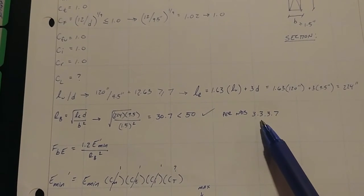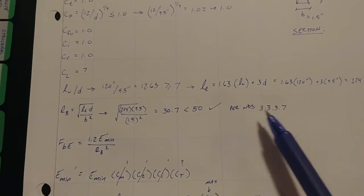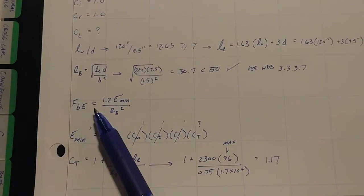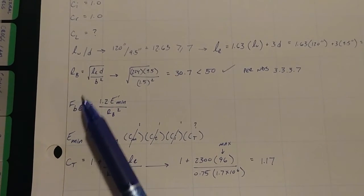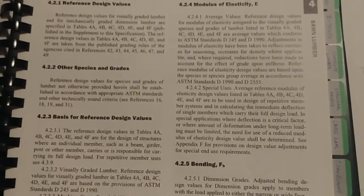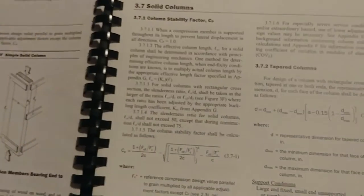RB equals square root of LE times D over B squared. That gets you 30.7. That needs to be less than or equal to 50. So we're good there. That's per NDS 3.3.3.7. Then FBE is the next thing you need to find. This is all list out literally directly in a row. It's a step-by-step on how to do it. And here we can even quickly go to it for you guys. So we're not, trust me that I'm not just making it up.